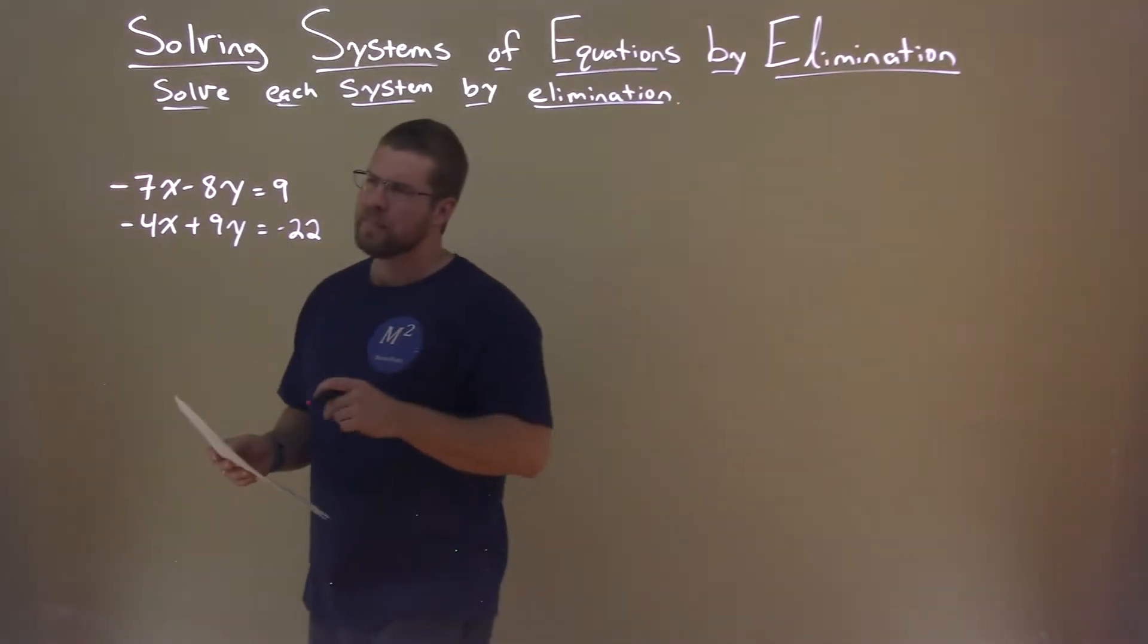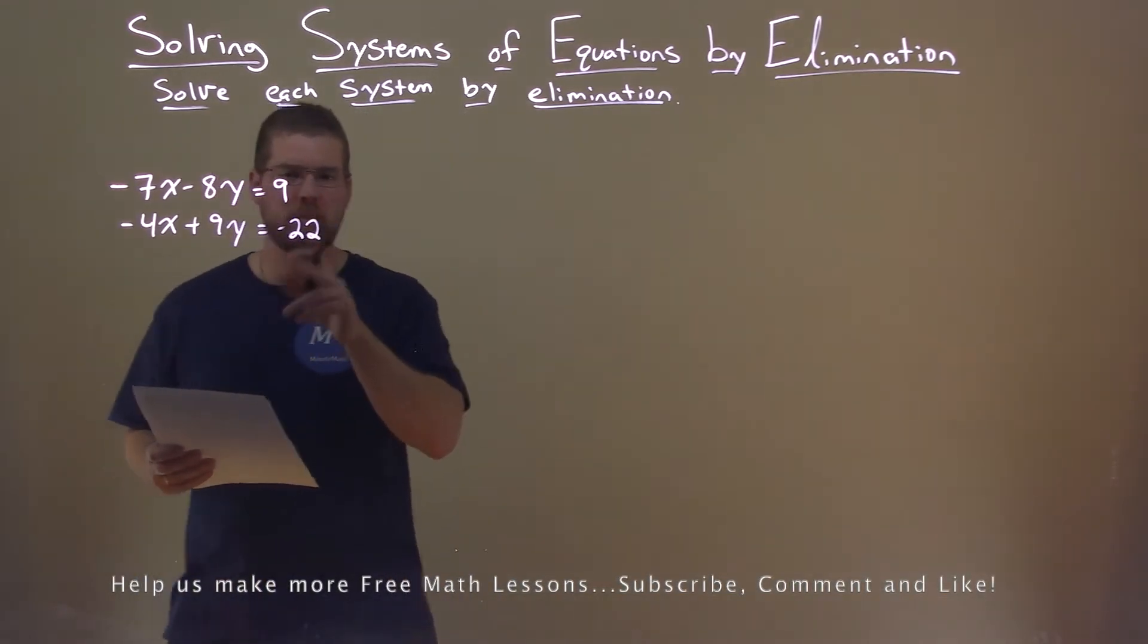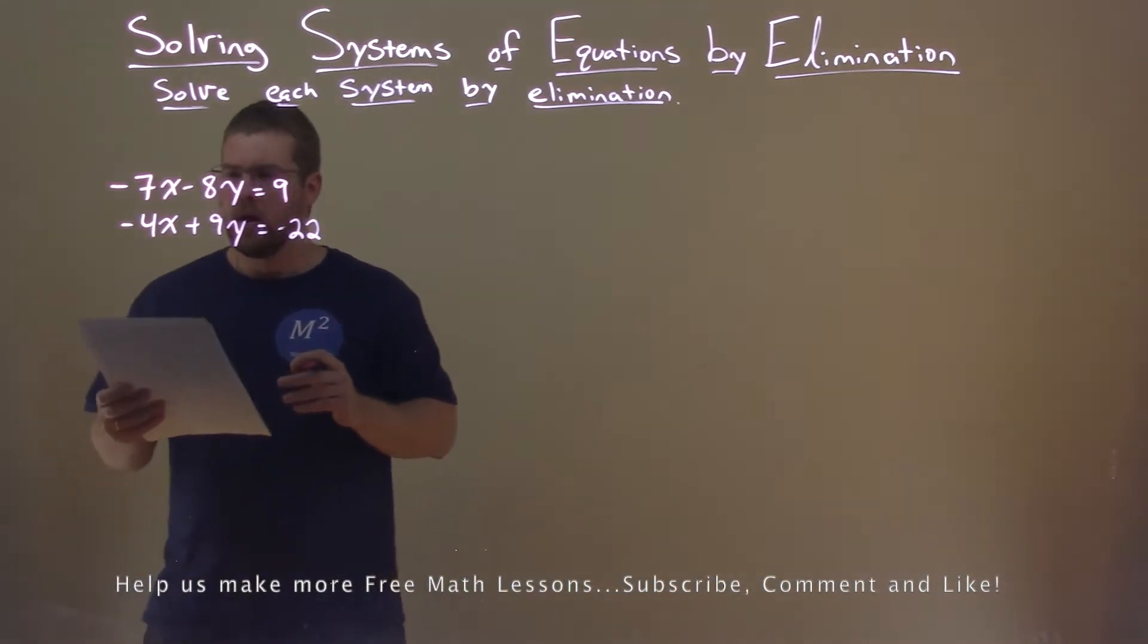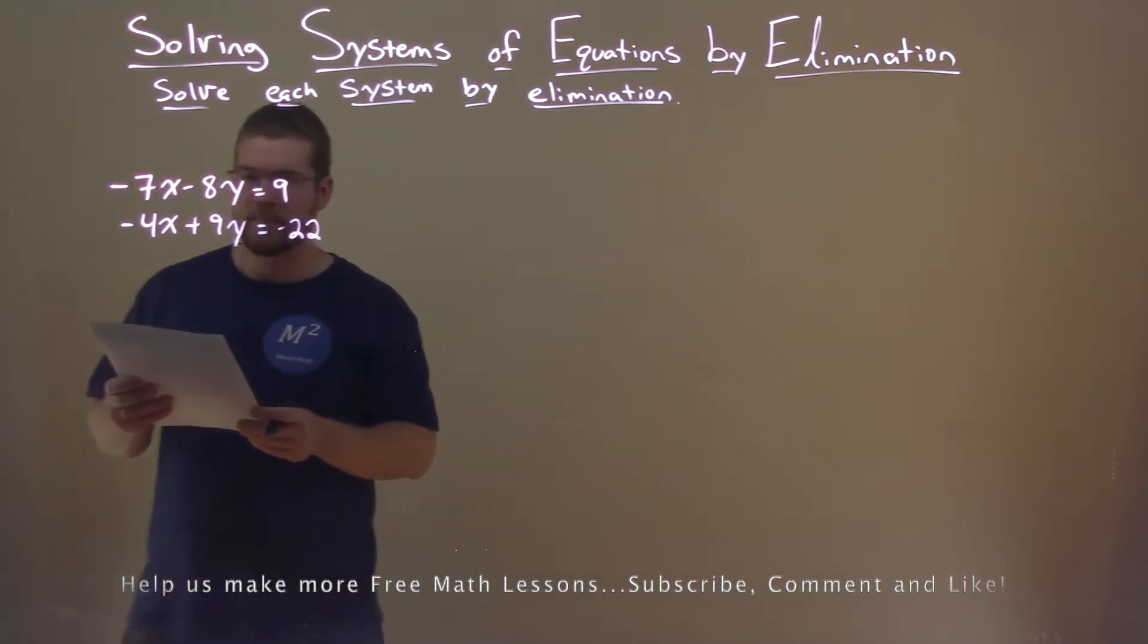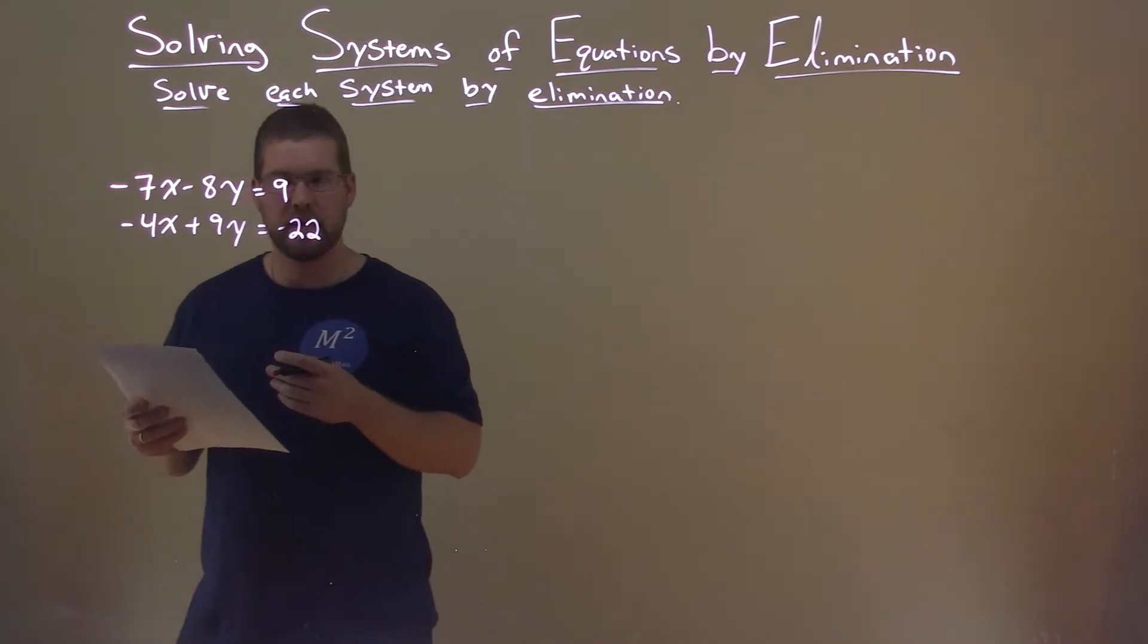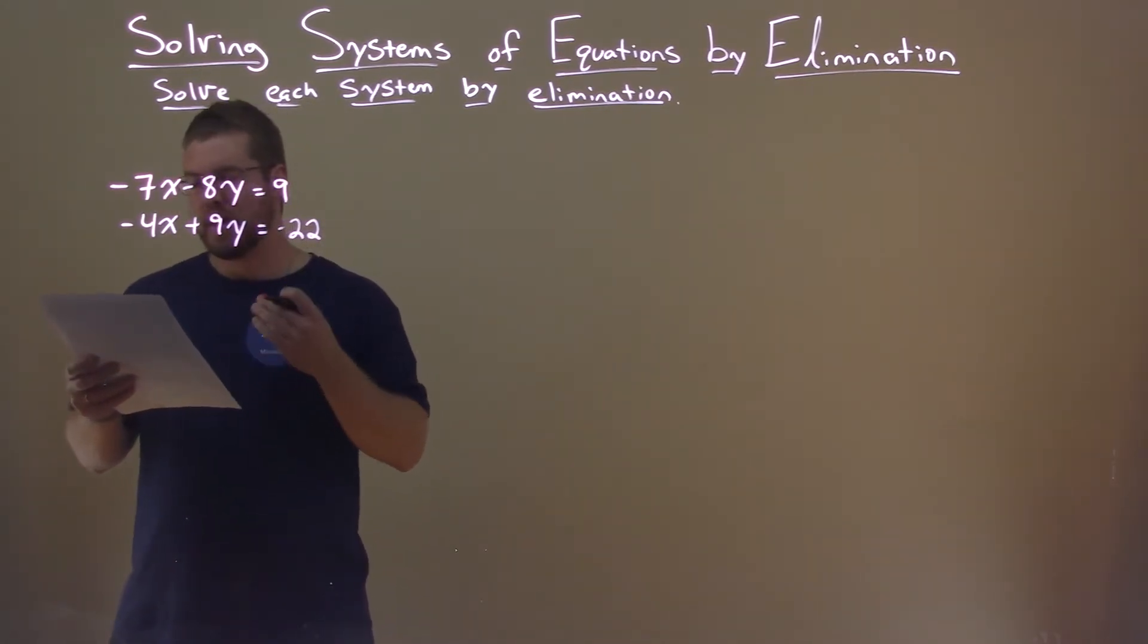We're given this problem: negative 7x minus 8y equals 9, and minus 4x plus 9y equals negative 22. Well, my goal is to try to find some variables that eliminate, but here there's nothing that directly does. So we're going to have to multiply each one of these equations by a number.